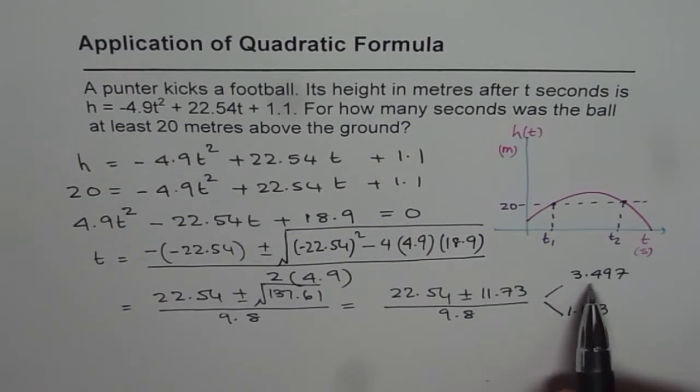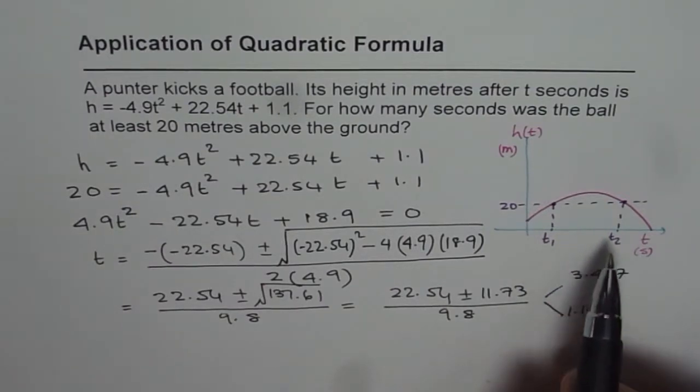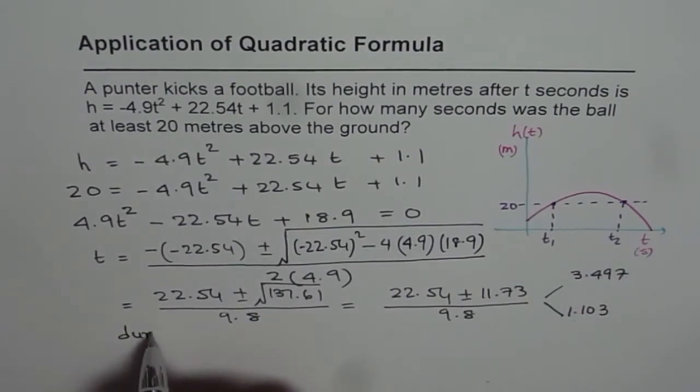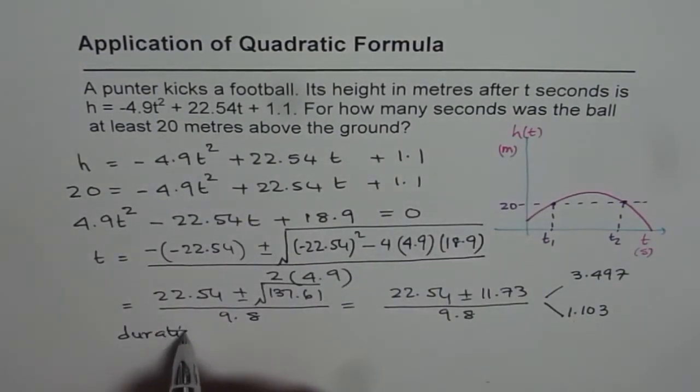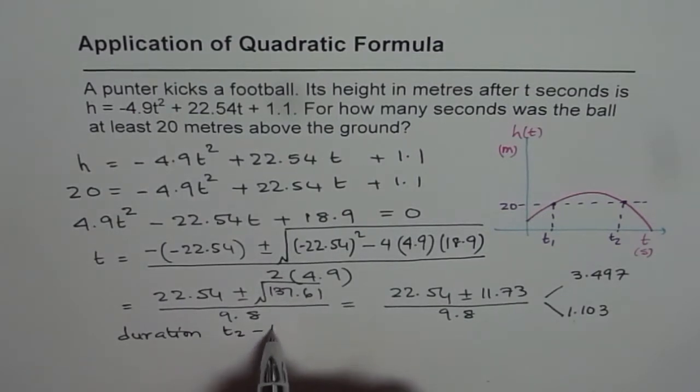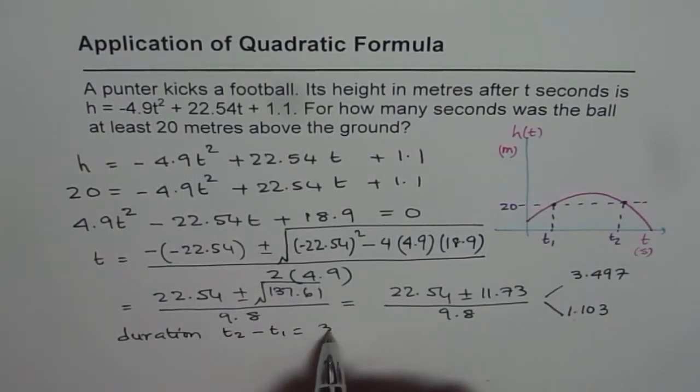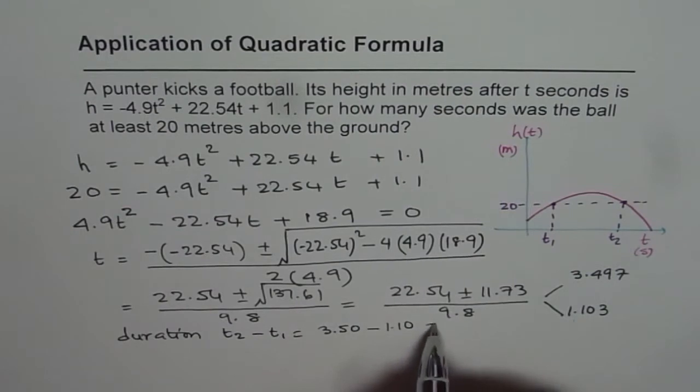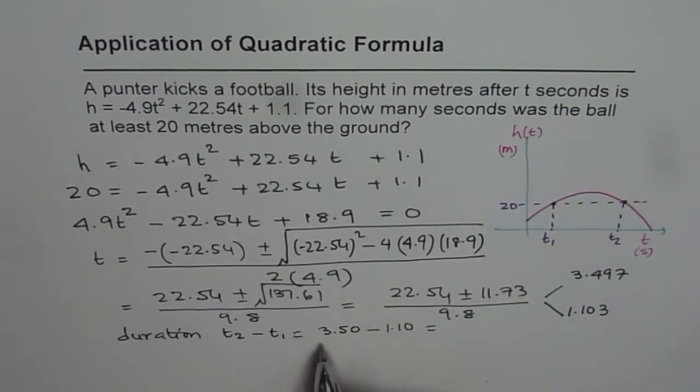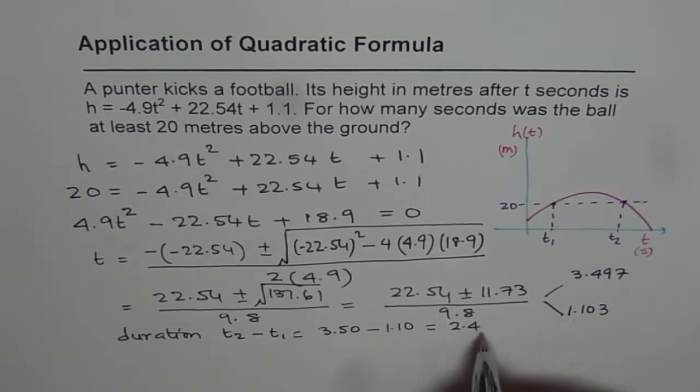Now it is good practice to just round them off to one decimal place. We could have done two since this is 0.54, but let us round them to one decimal place and then we can find the duration when it is above 20 meters. So the duration is the time during which the height of the ball is above 20 meters, so duration is t2 minus t1, which is, we can write this as 3.50 minus 1.10. So that gives us 2.4 seconds.